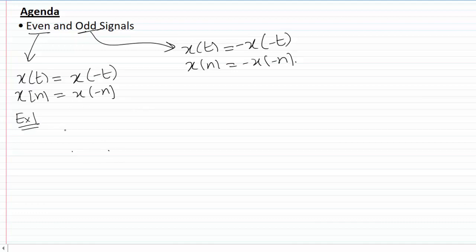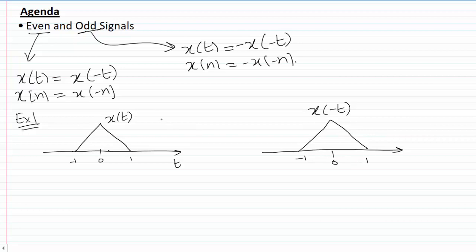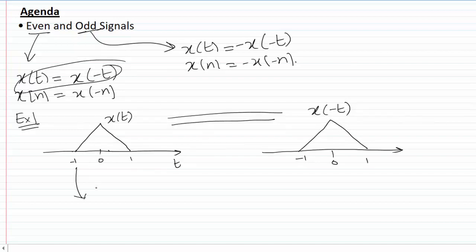For the first example, we have a signal x(t) that looks something like this, and the question is whether x(t) is even, odd, or neither. To test this, we first find its time reversal x(-t). If we plot the time reversal, it looks similar to x(t), and therefore we can say this signal is an even signal because it has even symmetry.